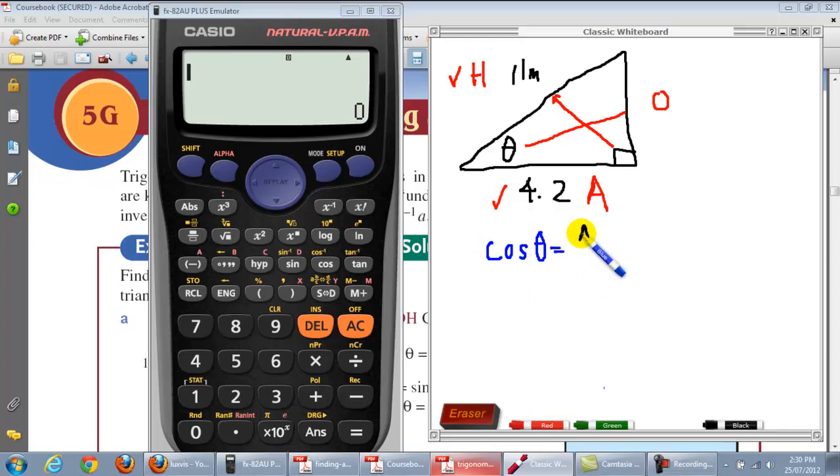Put it in. Now we start to put the things in. Well we don't know what it is. That's what we're trying to find the angle. 4.2 over 11.